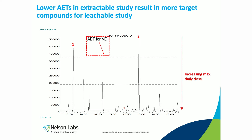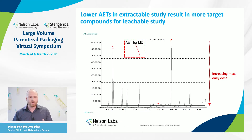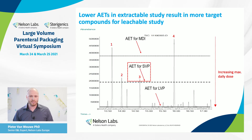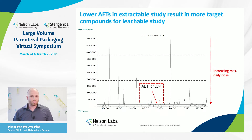For example, a metered-dose inhaler has a very low daily dose in the microliter range, so only a minimum amount of compounds would be present above that AET — in this case, only two compounds. Moving to formulations with a higher daily dose, meaning a lower AET, you can expect more and more compounds present above the analytical evaluation threshold. For large-volume parenterals, where the maximum daily dose is orders of magnitude higher, the AET is very low, resulting in a significant number of peaks present above the AET.